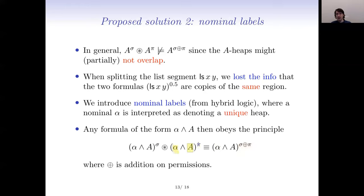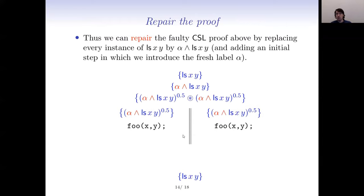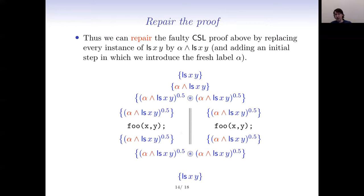Let's use this to repair our proof. We start with a list segment from x to y. We make a fresh label α and snapshot it — α now describes the exact heap modeling this list segment. We break it into two read-only copies, distribute one to each thread, do the traversal, then combine back. Now we have two read-only copies of the same heap α, so we can add the permissions and restore read-write permission, then weaken away α. The parallel proof now works.